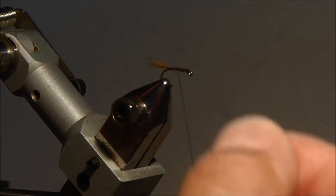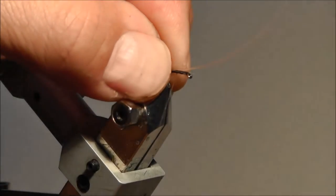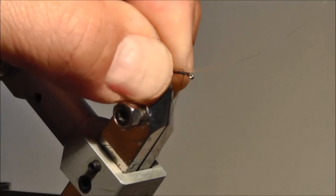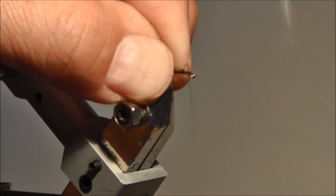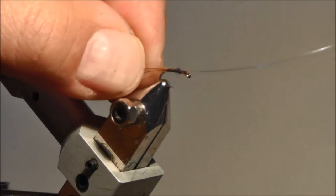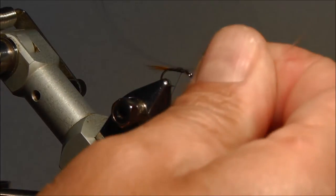You take a 12 pound mono, just like that, and you tie it on top of the hook shank. Yeah, you just pull it.